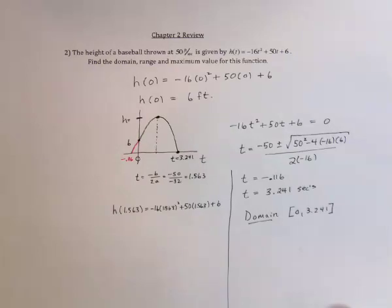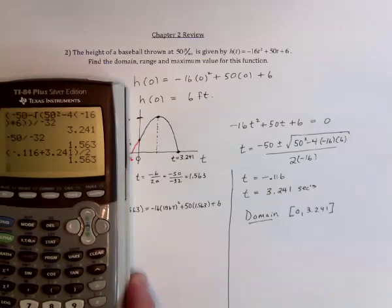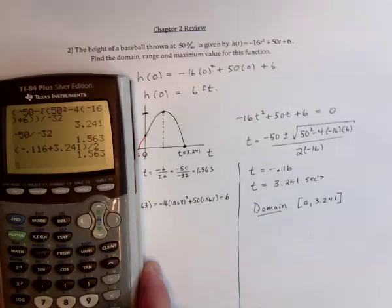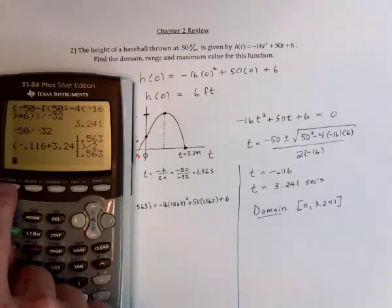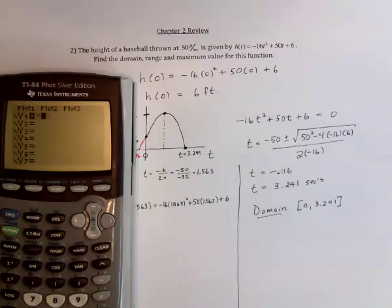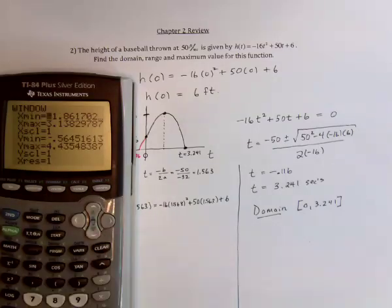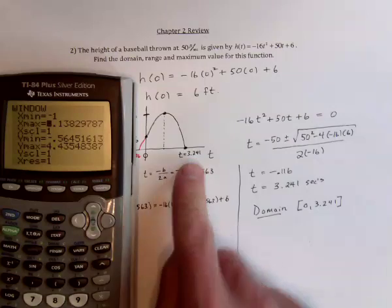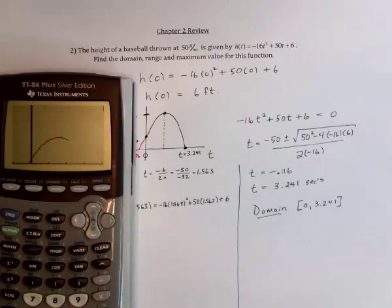And now another thing that I can do to verify that I'm doing this correctly is graph it and make sure that the graph matches up with what I've got over here. So go to y equals negative 16x squared plus 50x plus 6. And for the window, I can have it go from negative 1 and this goes out to 3.2, so let's say I just go to 4. And then for the height, 0 to I'm not sure, but I'm going to try 100 feet for baseball and see how that looks. Yeah, not bad.